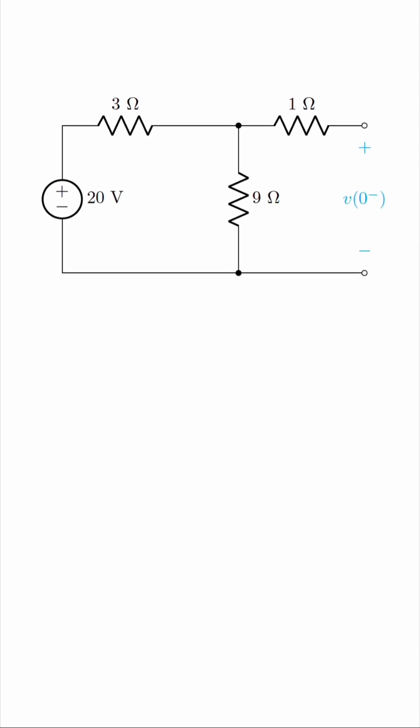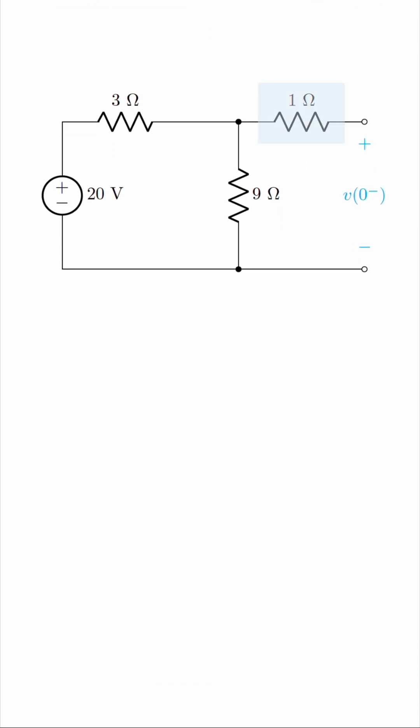How can we find this voltage? This is actually very simple. This one ohm resistor gets no current because there's no return path, so we basically have a simple voltage divider. V of zero minus is the voltage across the 9 ohm resistor, so we can use voltage division. We have 9 over 9 plus 3 times the 20 volts. This works out to be 15 volts.